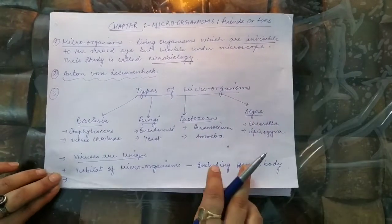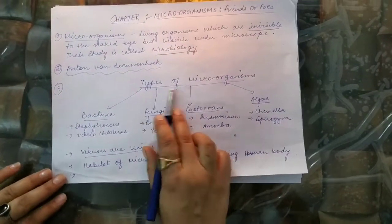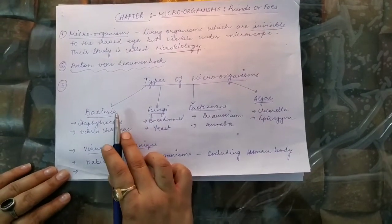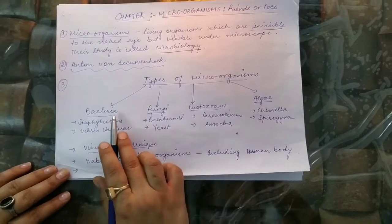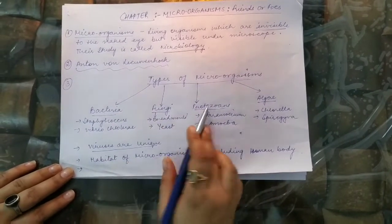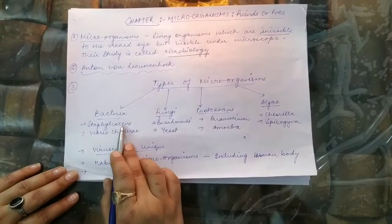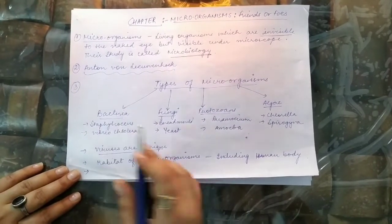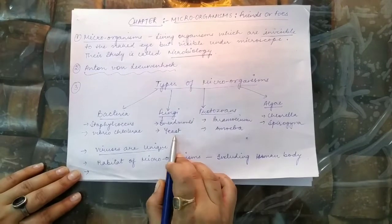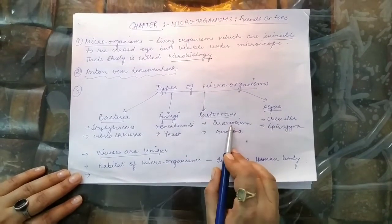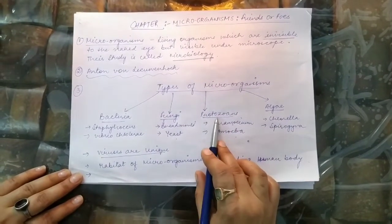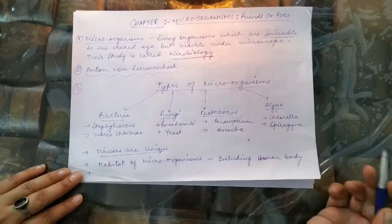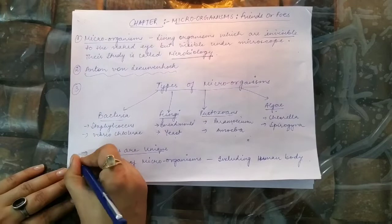The different types of microorganisms are broadly categorized into four categories: bacteria, fungi, protozoans, and algae. Staphylococcus and Vibrio cholerae are examples of bacteria. Bread mold and yeast are examples of fungi. Paramecium and amoeba are examples of protozoans. Chlorella and Spirogyra are examples of algae.